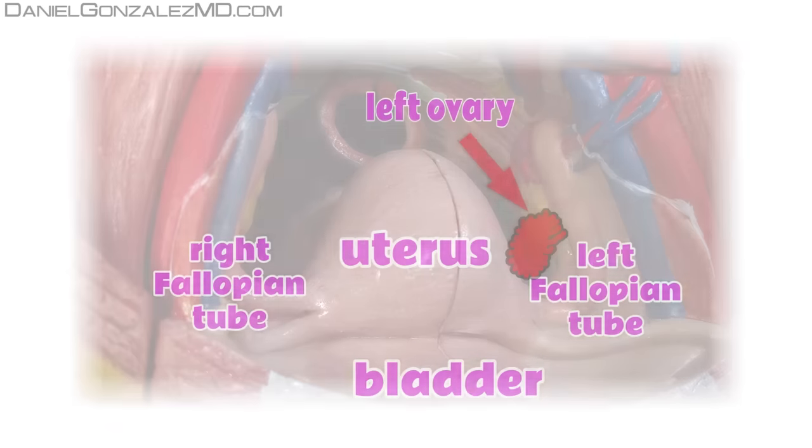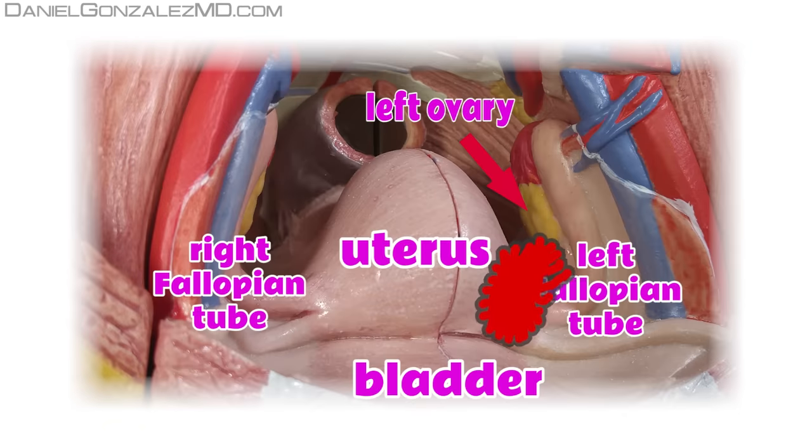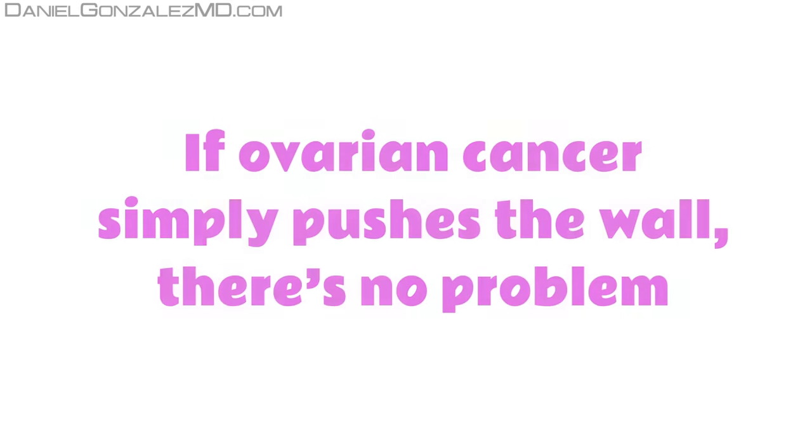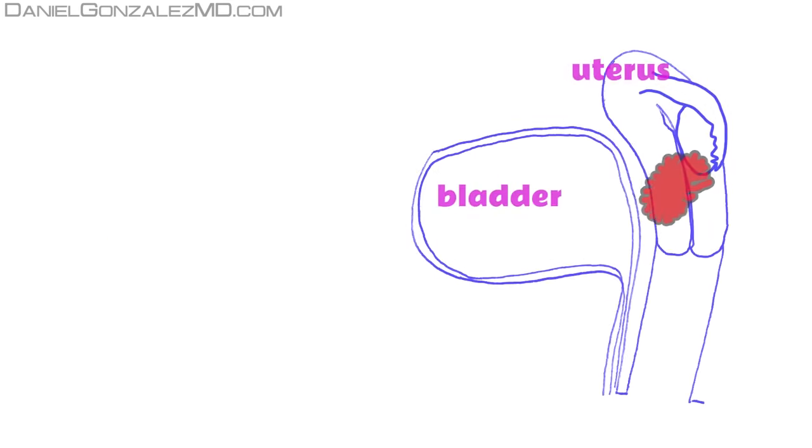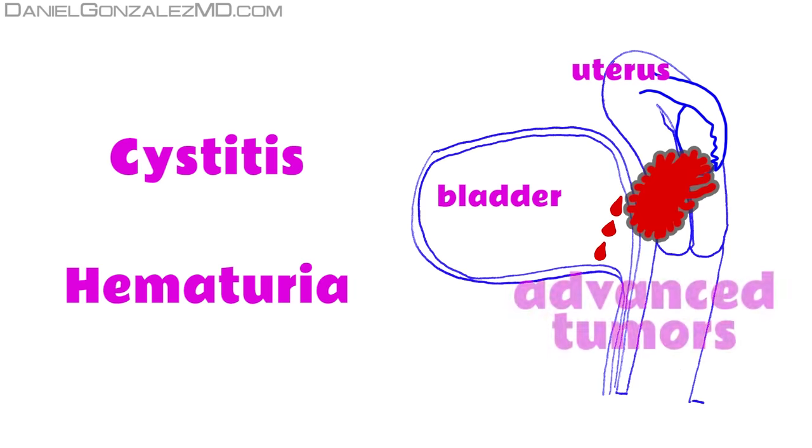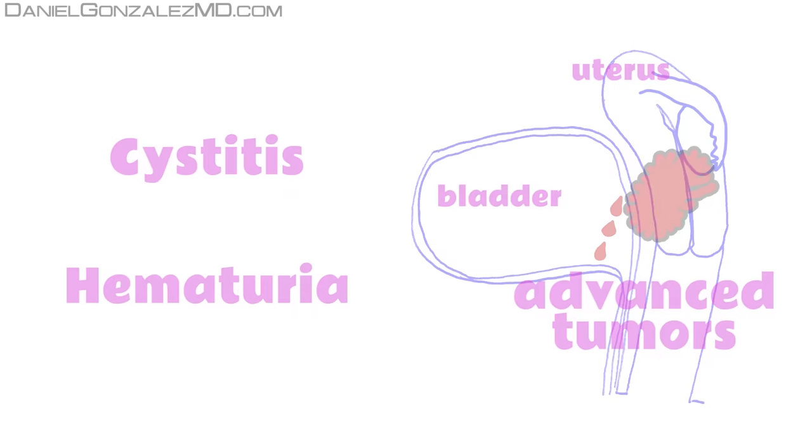If the tumor grows a lot and forward, it can push into the bladder. If ovarian cancer simply pushes the wall, there's no problem. If it breaks blood wall, blood might appear in the urine, producing symptoms of cystitis, and staining urine red, phenomenon called hematuria, but this only occurs in very advanced tumors.